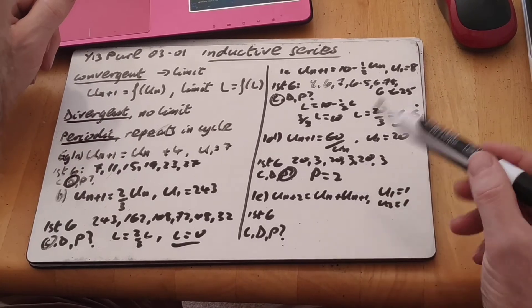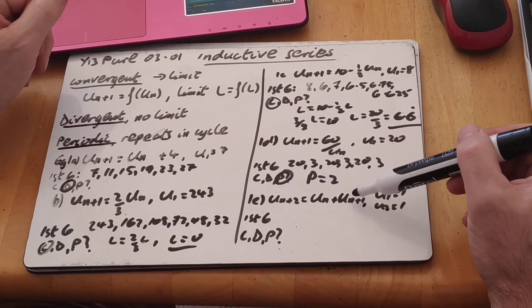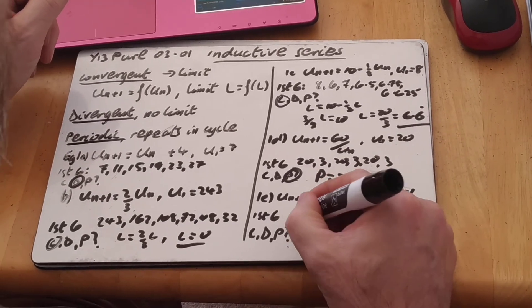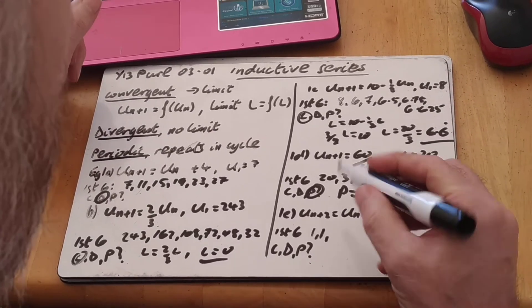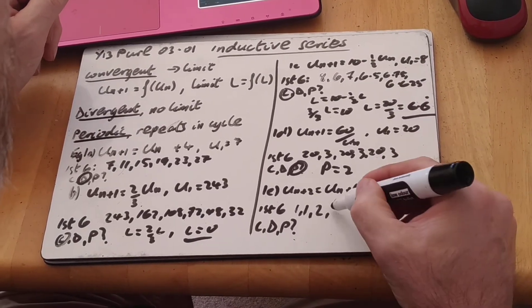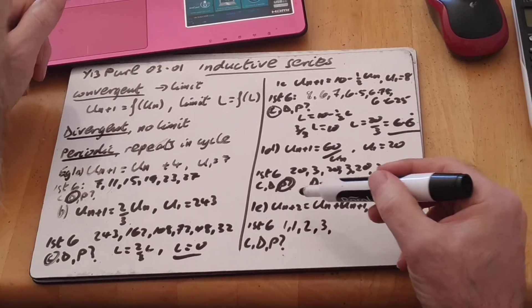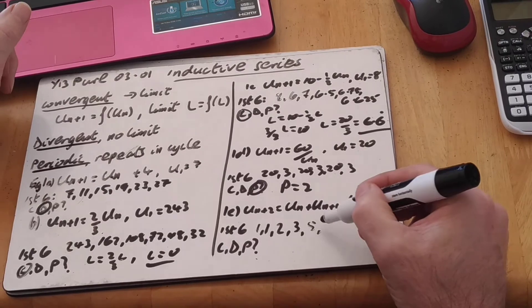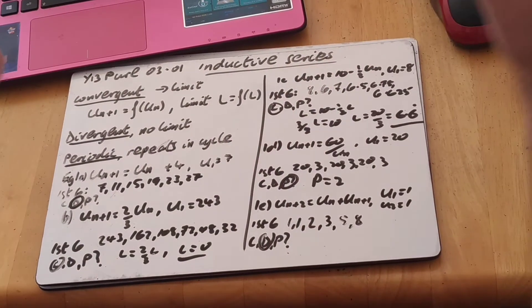And the last of these ones involves the two previous terms. So it says u of n plus 2 equals u n plus u n plus 1. u1 equals 1, u2 equals 1. But what this is, it's a Fibonacci series. It's the classic Fibonacci. So the third term is the first plus the second, 2. The fourth term is the second plus the third, 1 add 2 is 3. The fifth term is the third plus the fourth, 2 add 3 is 5. And the next term, the sixth term, is 3 add 5, which is 8, and so on. So this is definitely divergent. It's going to get bigger and bigger and bigger as we go along.